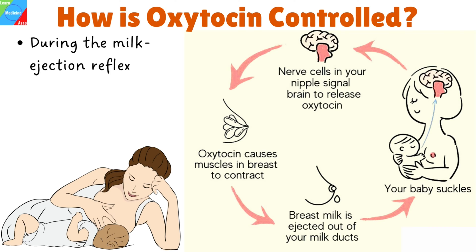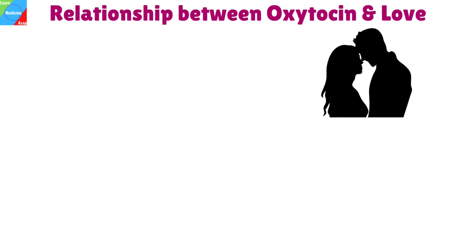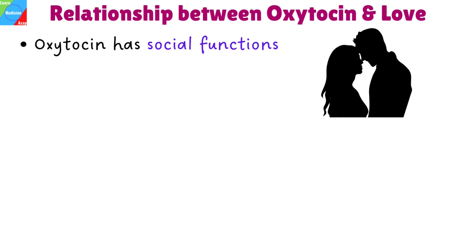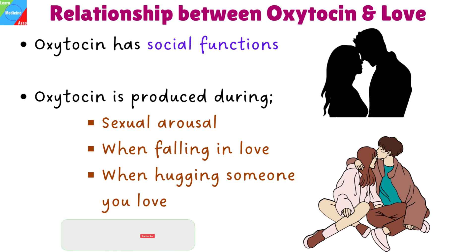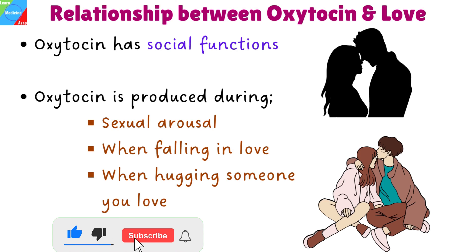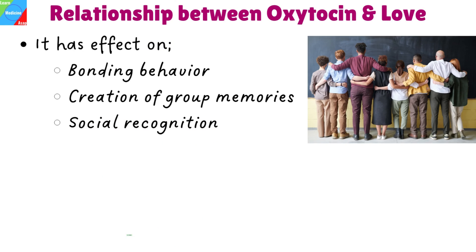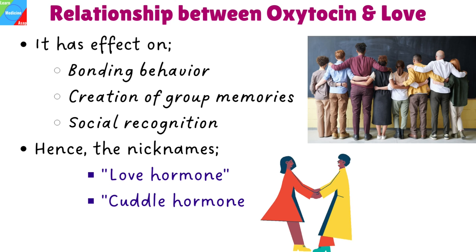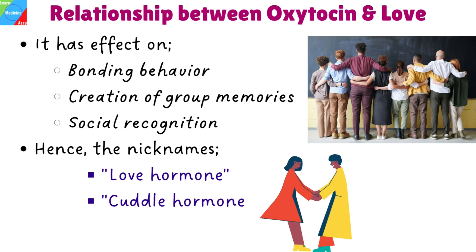What is the relationship between oxytocin and love? Other than its role in childbirth and breastfeeding, oxytocin has social functions. Our bodies also produce oxytocin during sexual arousal, when falling in love, and when hugging someone you love. It also has an effect on bonding behavior, the creation of group memories, social recognition, and other social functions. It is for these reasons that it has earned the nicknames 'love hormone' and 'cuddle hormone.'